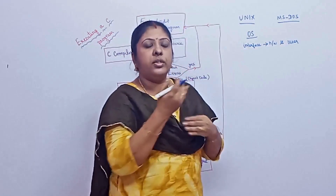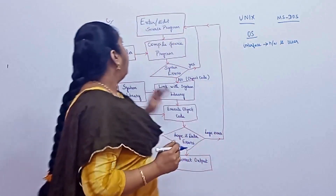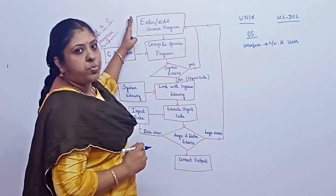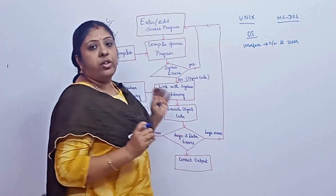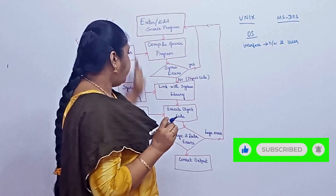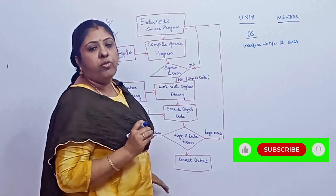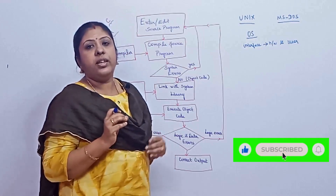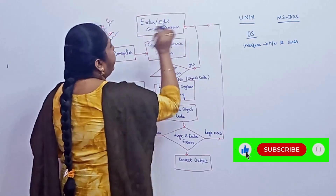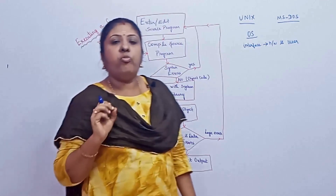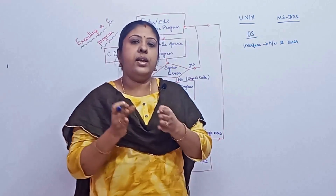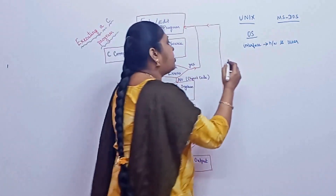Now we are going to create a source program and understand what processes take place after that. Consider entering or editing the source program. In the previous video we had already discussed about the flowchart — how to create a flowchart and what the symbol meanings are. The first step is to enter or edit the source program. The program that the user writes in a high level language is called the source program.